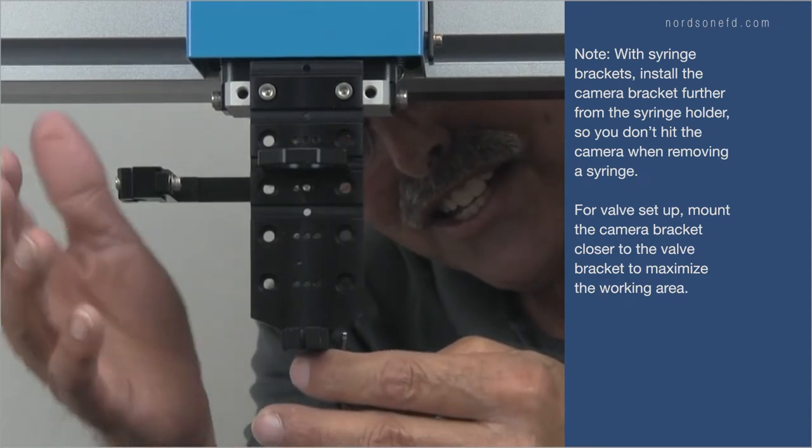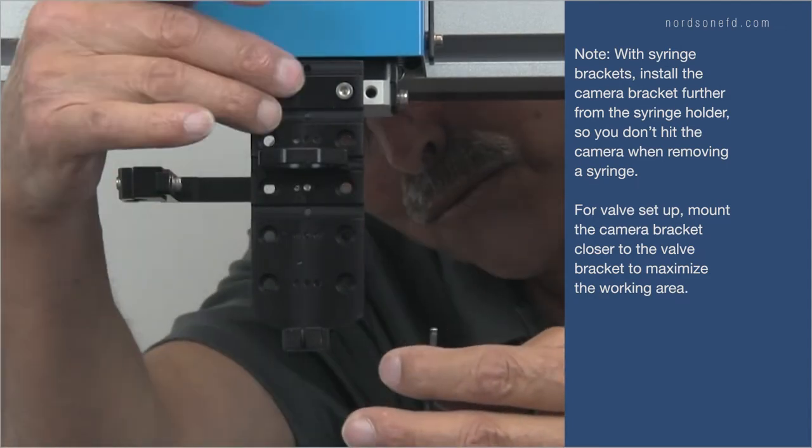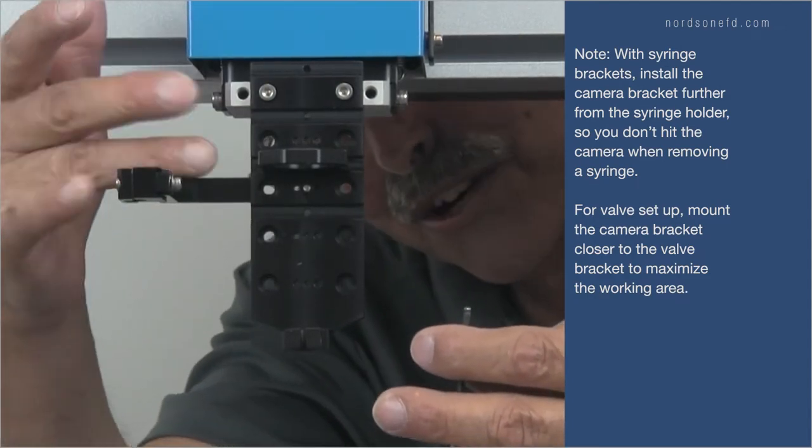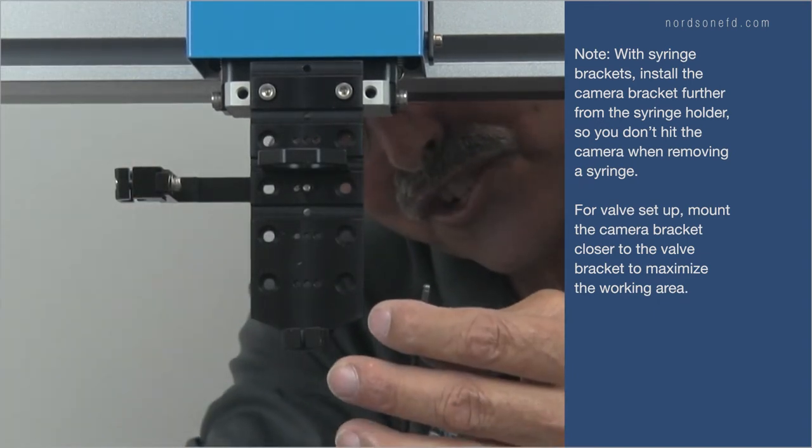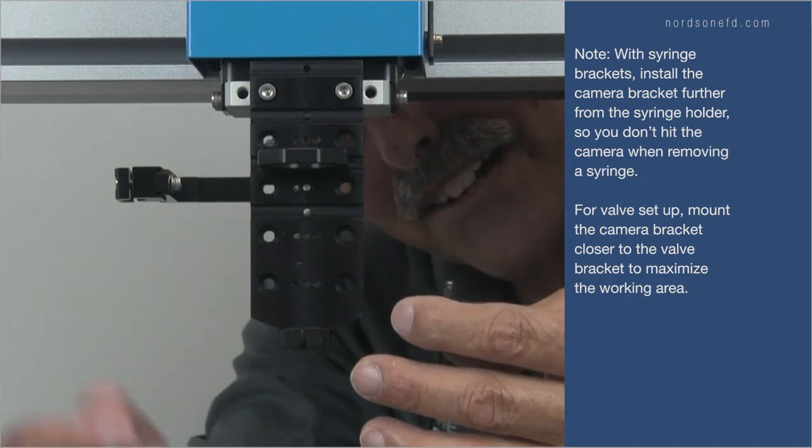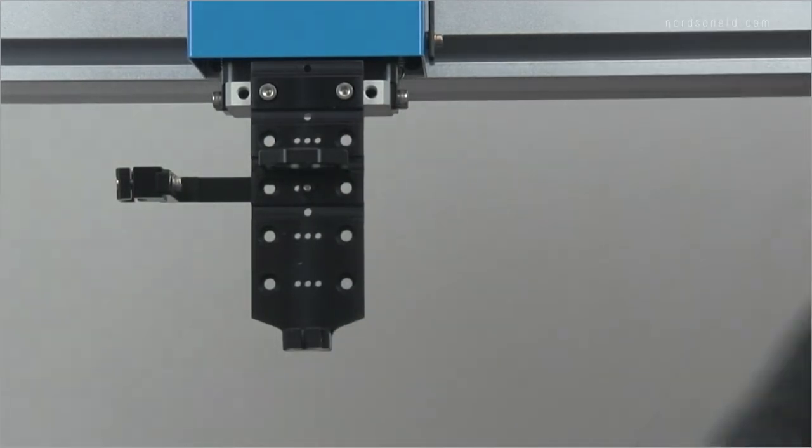It really doesn't matter how far out this is because the tip to camera offset is going to compensate for those two physical locations. The idea here is I don't want to be hitting this camera at all when I'm working with this, because every time I do that I may mess up what I was just doing in terms of focus. So there it is, it's all mounted, ready to go.